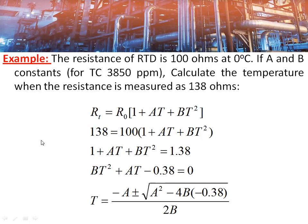Here is an example showing the use of the Callendar-Van Dusen equation for getting the temperature-resistance relationship. The resistance of the RTD is 100 ohms at 0°C. Using the constants A and B for a temperature coefficient of resistance of 3850 ppm, we need to calculate the temperature when the resistance is showing 138 ohms. This 138 ohms is measured by the signal conditioning circuit and must be converted to temperature. Using the equation: 138 = 100 × (1 + AT + BT²), we get the quadratic equation: BT² + AT − 0.38 = 0.